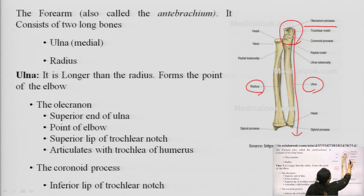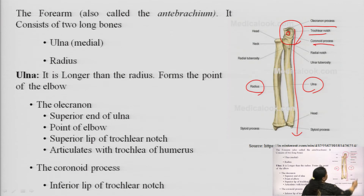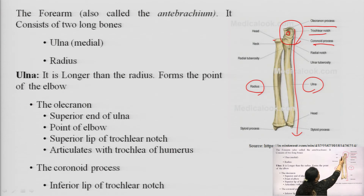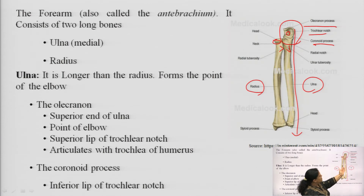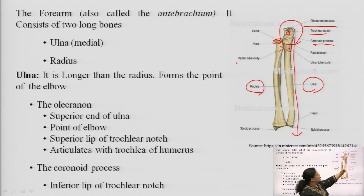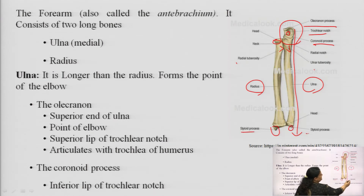After the olecranon process, we have the trochlear notch in the center, and at the end the coronoid process fixes another bone in this hollow area. The radius has a head and neck. Both radius and ulna have a protruding area called the radial tuberosity in the radius and the ulnar tuberosity in the ulna. At the far end, both bones have a bony protruded extension called the styloid process.